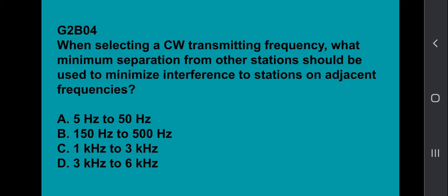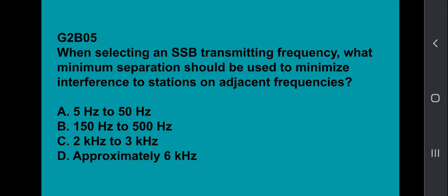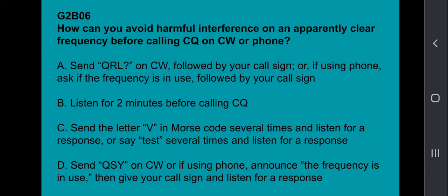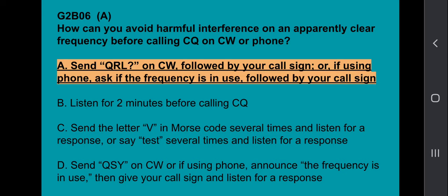G2B04: When selecting a CW transmitting frequency, what minimum separation from other stations should be used to minimize interference to stations on adjacent frequencies? That answer is going to be 2 kHz to 3 kHz. G2B06: How can you avoid harmful interference on an apparently clear frequency before calling CQ on CW or phone? Send QRL on CW followed by your call sign, or if using phone, ask if the frequency is in use followed by your call sign.